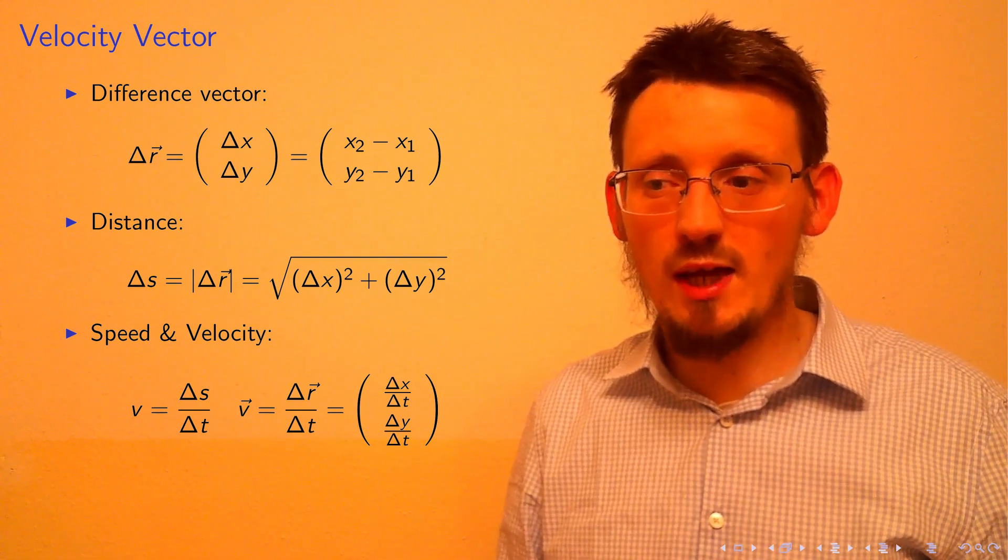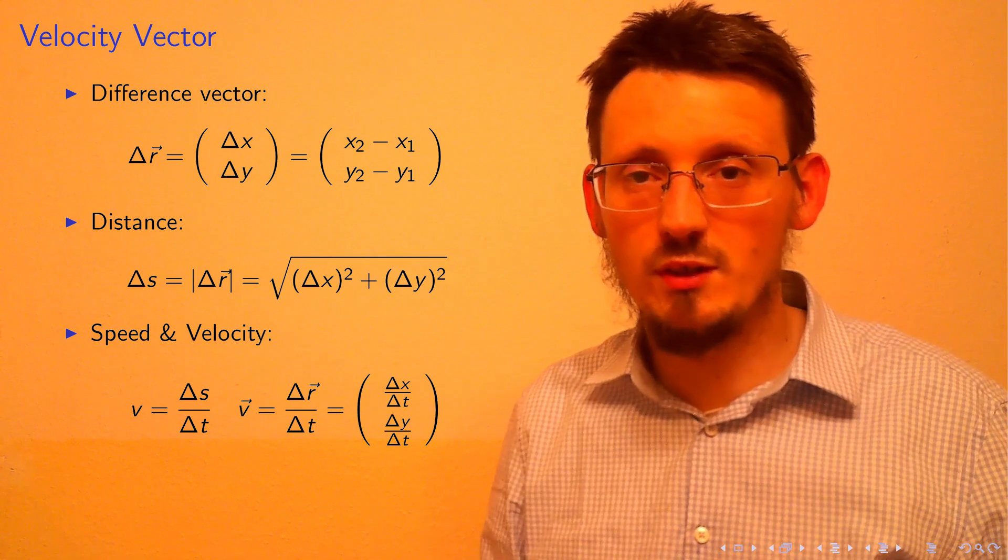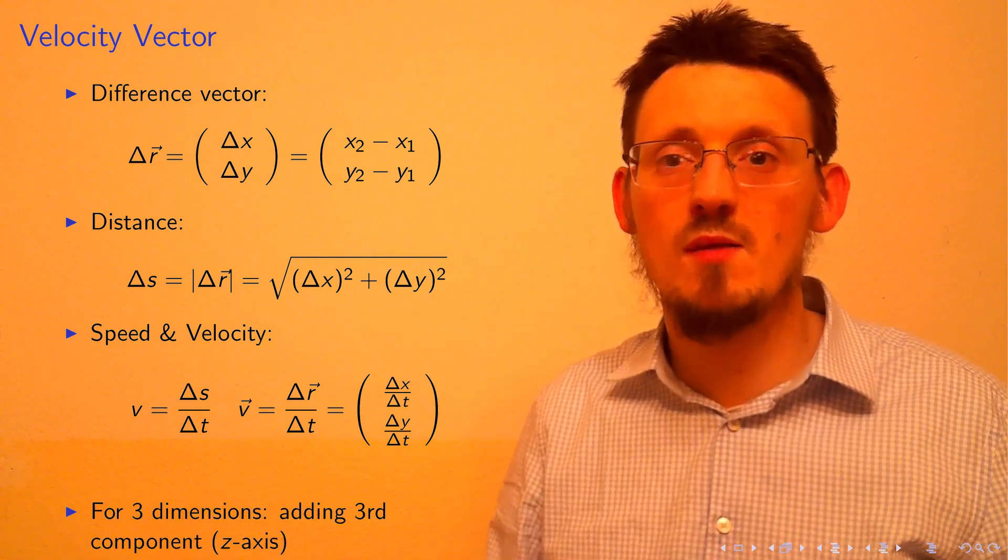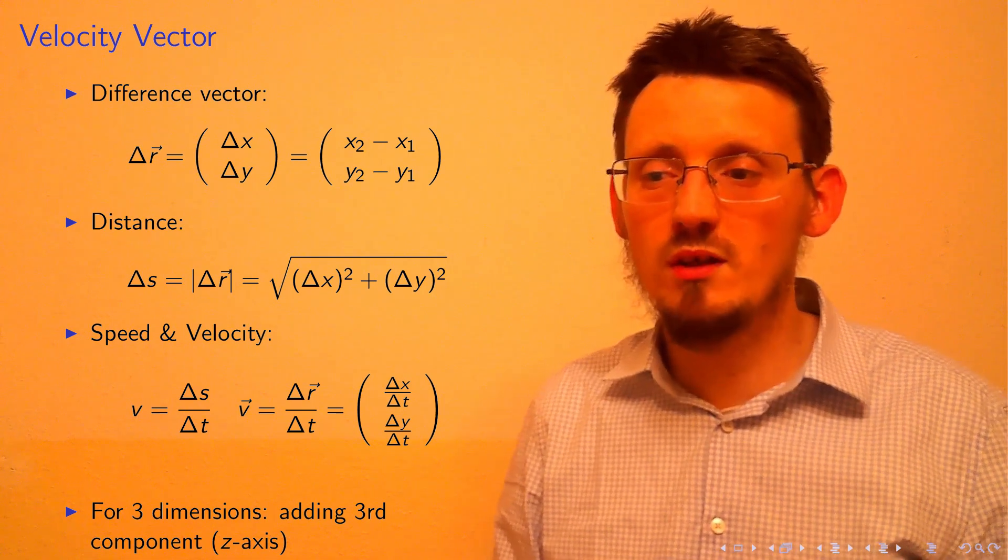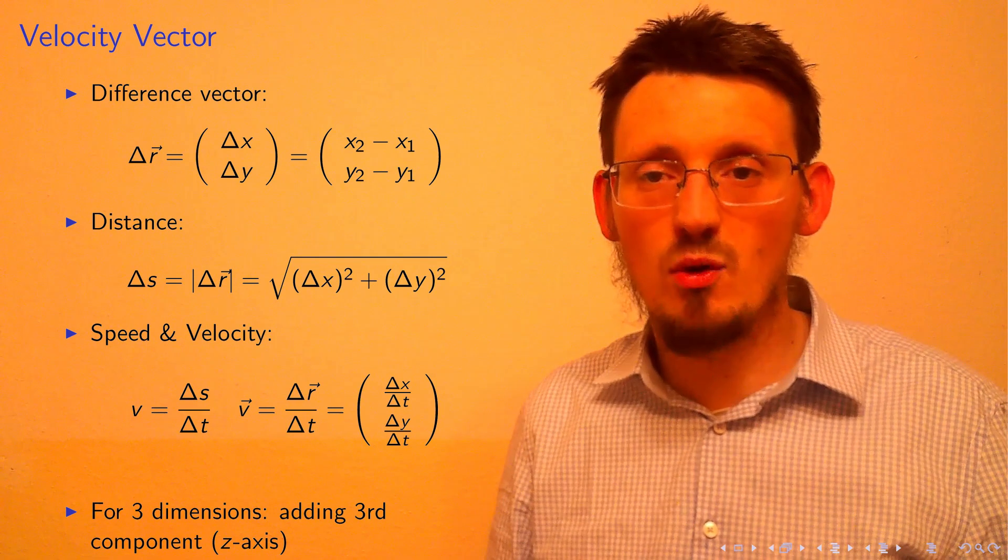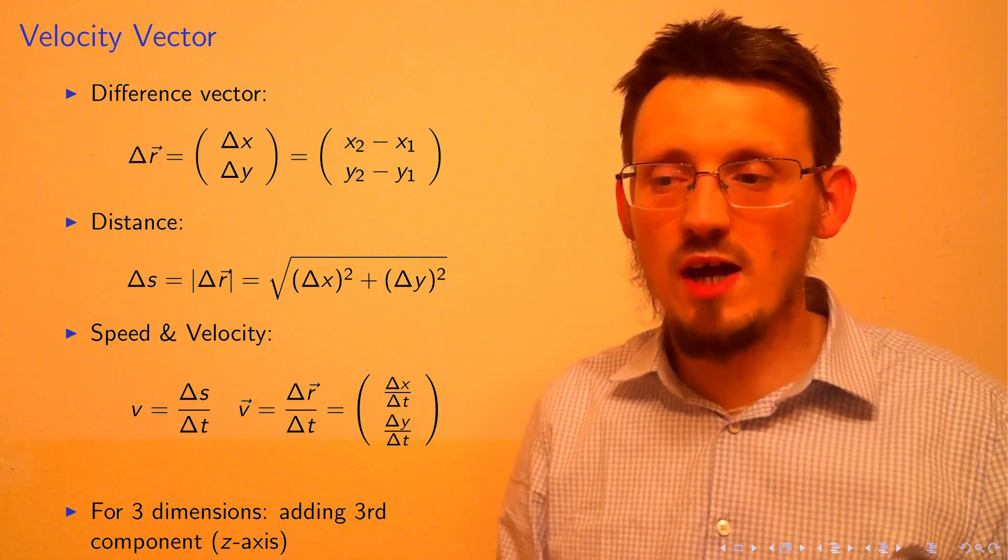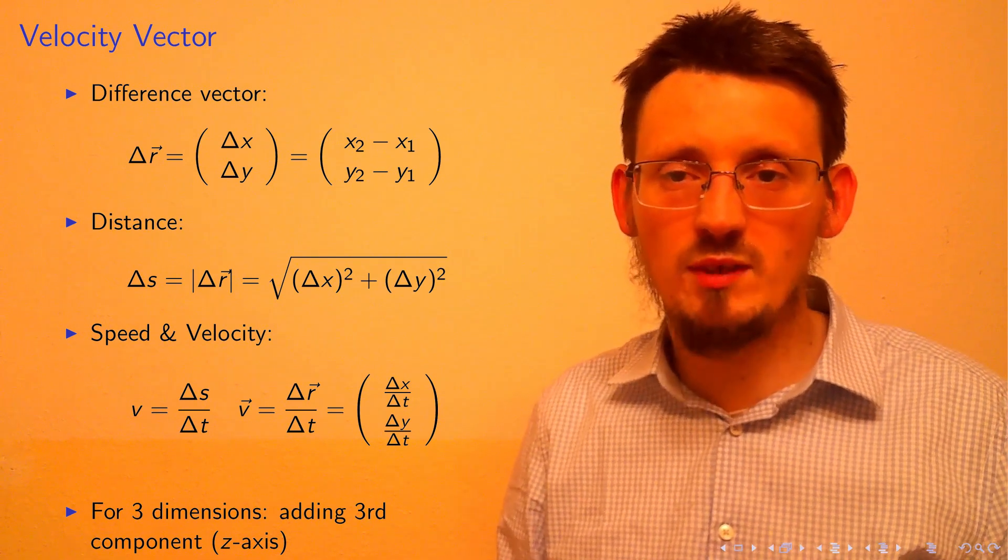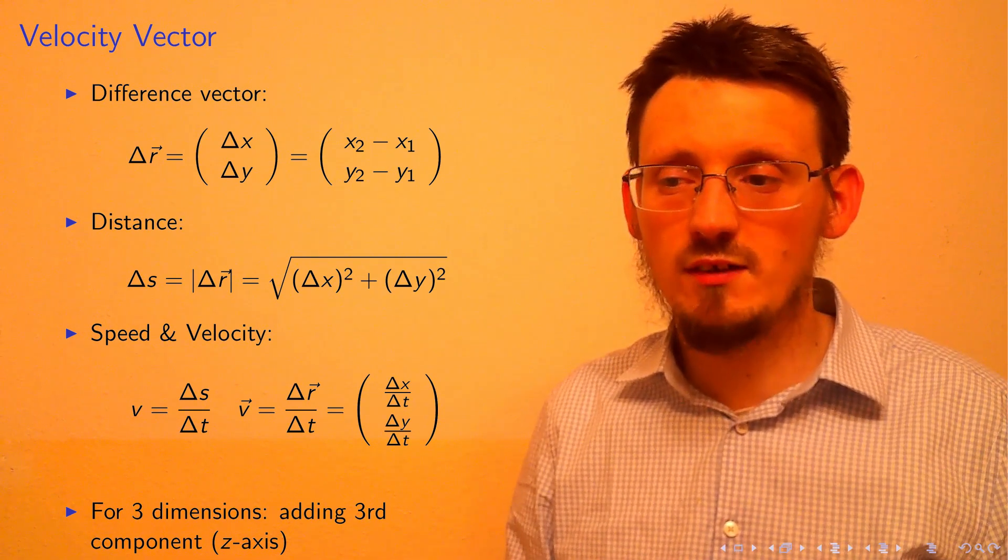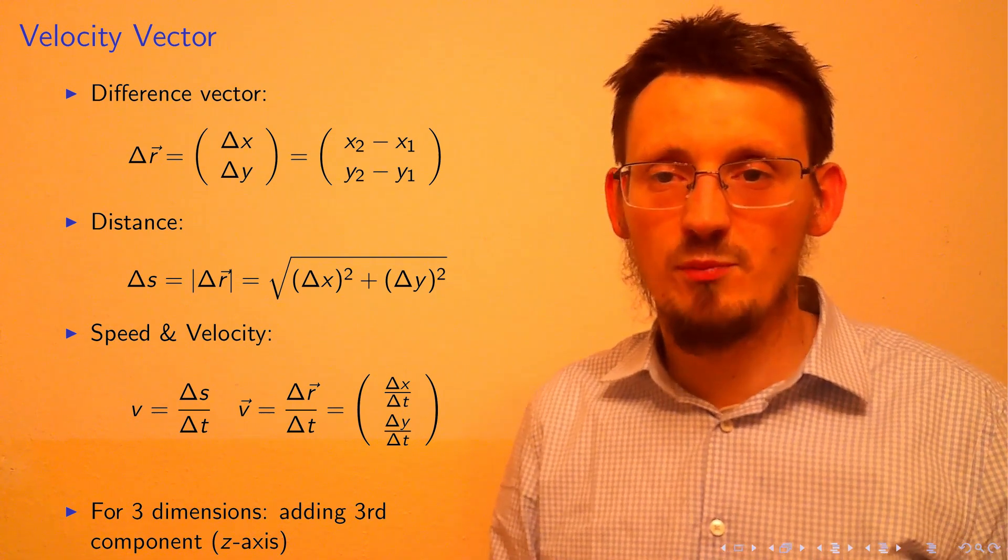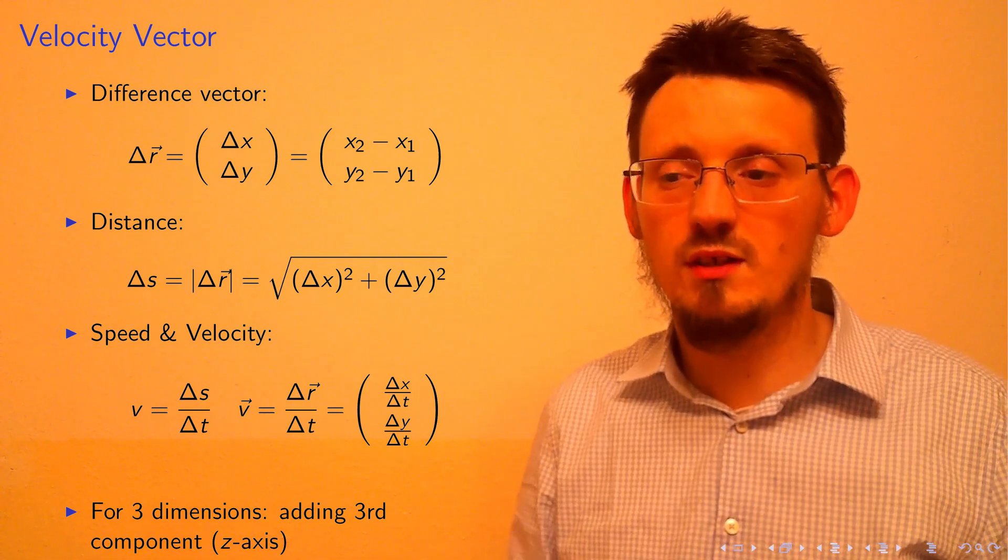If we want to describe motion in a three-dimensional world, it's very simple. We just add one additional axis, which means adding one component to every vector. For r₁ we get z₁, for r₂ we get z₂, for delta r we get delta z, and then divide by delta t to get the vectorial quantity velocity.